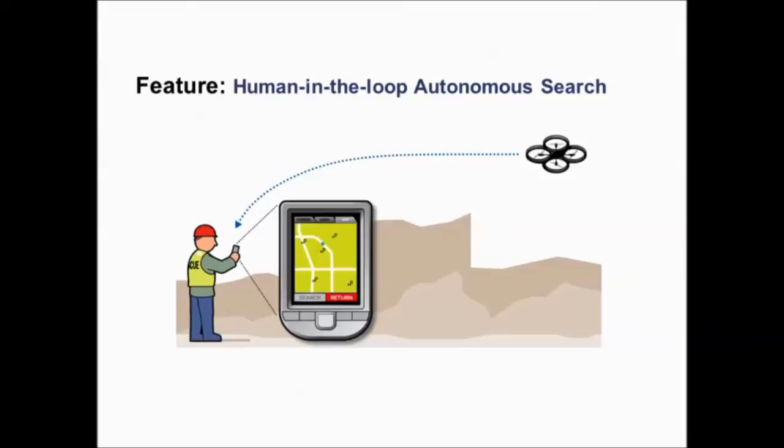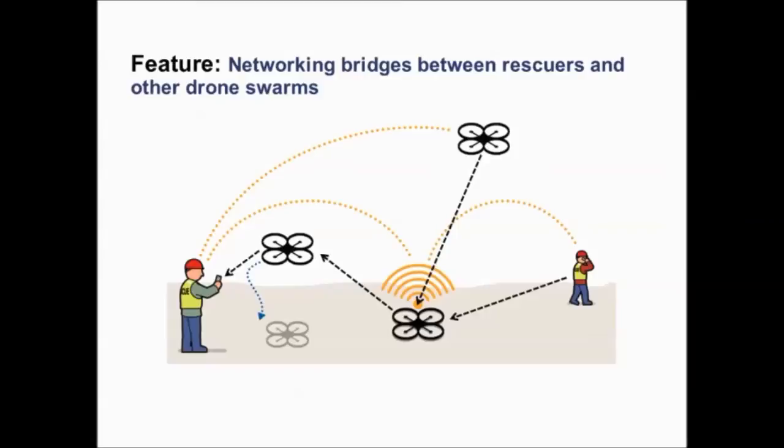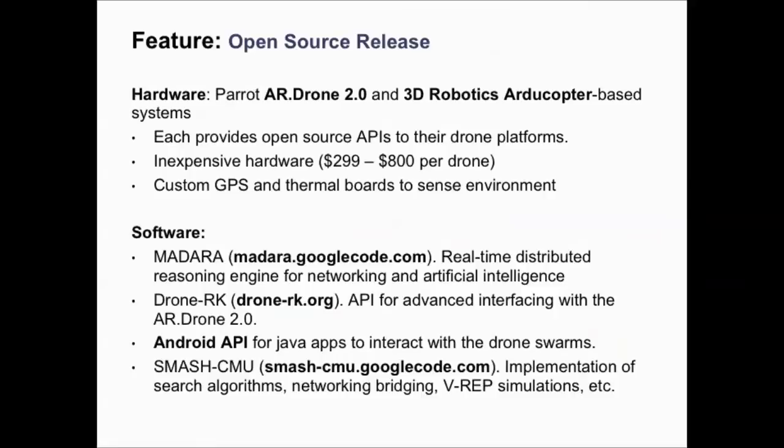We go about this by focusing on three core features. The first is human-in-the-loop autonomous search with a drone swarm controllable by a single human operator. The second core feature is network bridging that connects groups of rescuers, drone swarms, and sensors together, potentially over large distances.